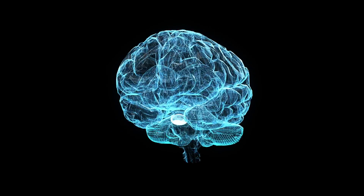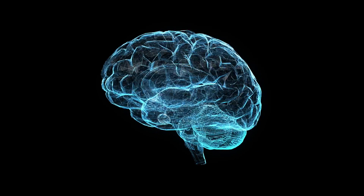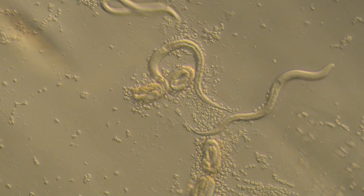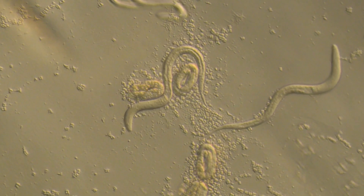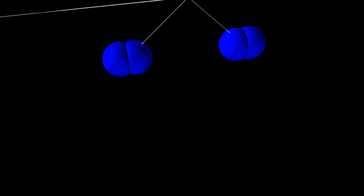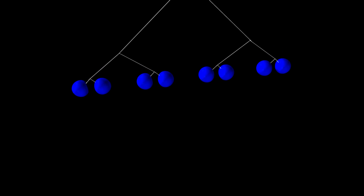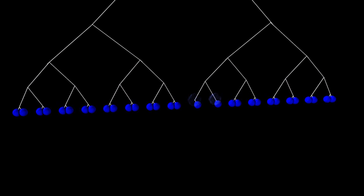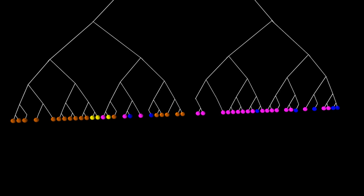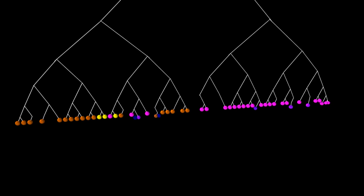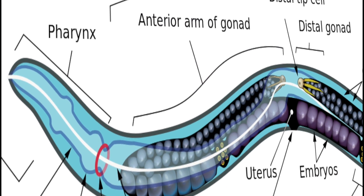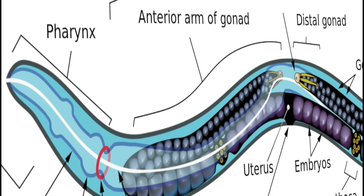Scientists have been able to follow this amazing process in detail during the development of C. elegans, a microscopic roundworm. In the following animation, the blue balls represent the cells of C. elegans that are created through several generations of cell division. The different colors assumed by later cells represent the different parts of the worm's body that those cells are being specified to build.